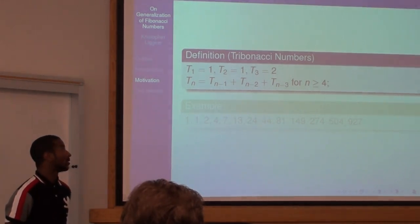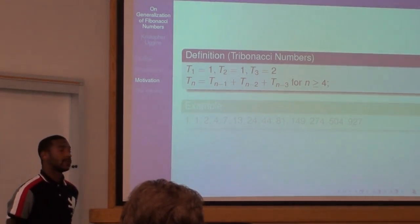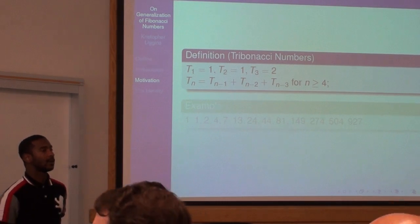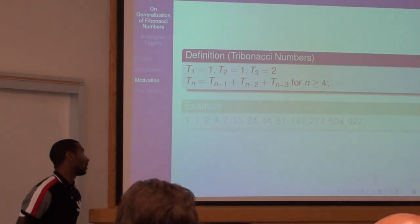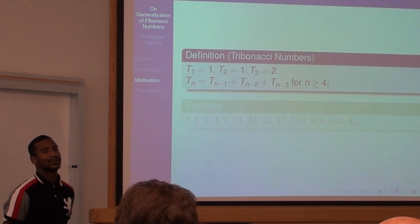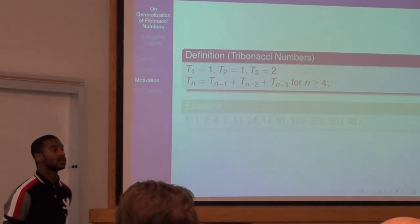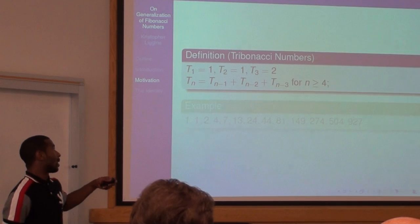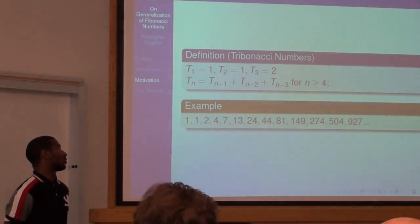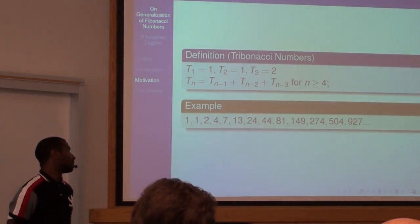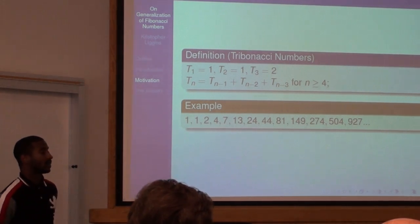Another generalization that was made because of the Fibonacci sequence is called the Tribonacci numbers, where you start with one, one, two. The addition of the three preceding terms will give you the next term, which the sequence will look like in the example.